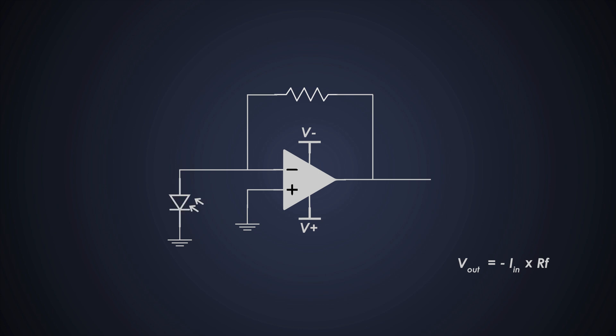For instance, if we have a photodiode generating 1 microampere of current and we choose a feedback resistor of 1 megaohm, the output voltage will be around minus 1 volt.